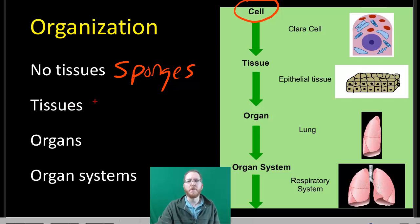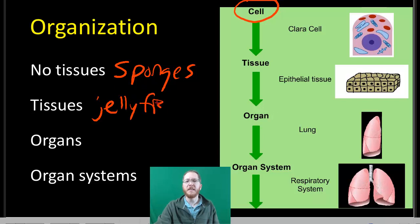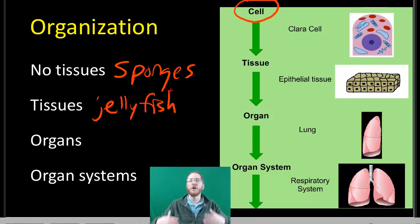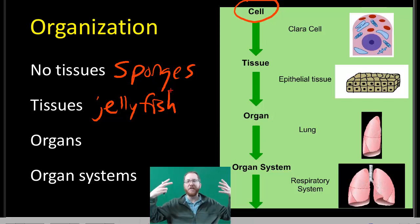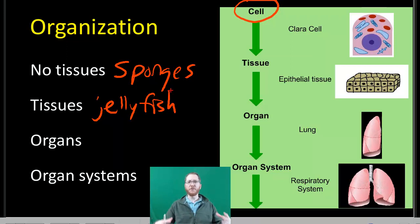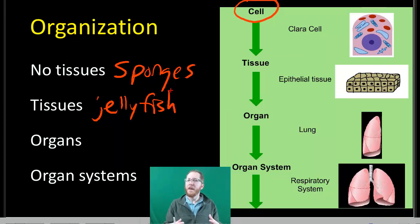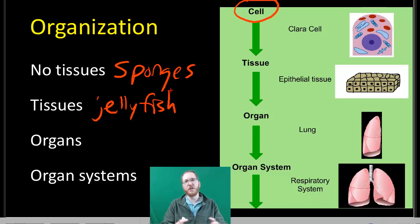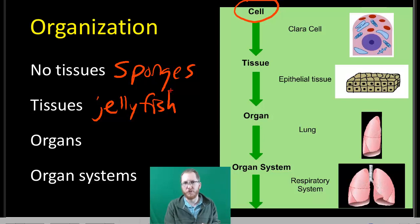Jellyfish and sea anemones represent the next level: tissue development. These organisms start to have basic muscular-like tissue and nervous-like tissue — groups of similar specialized cells doing certain functions. But they don't yet have full-fledged organs or organ systems, and haven't made the leap to stitching those tissues together into more elaborate, specialized structures.